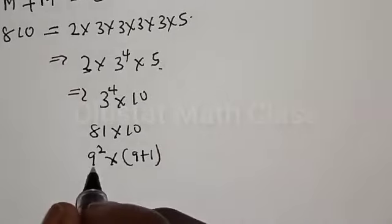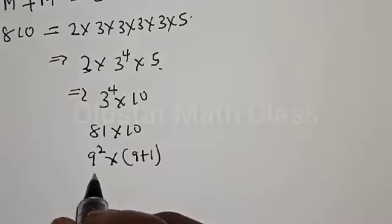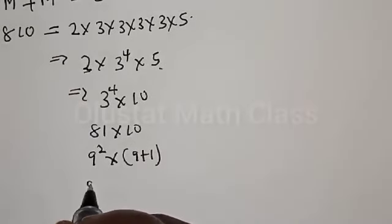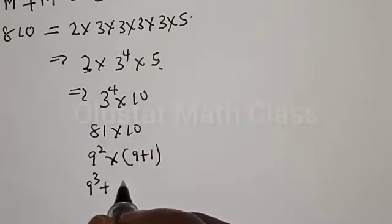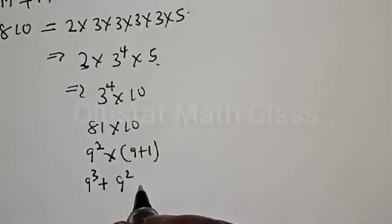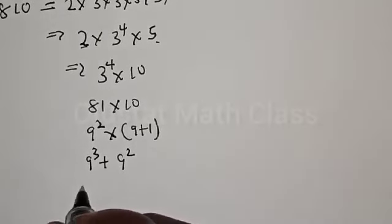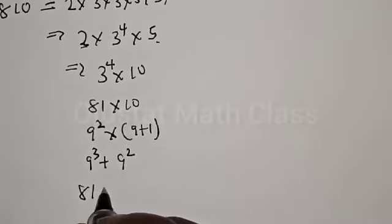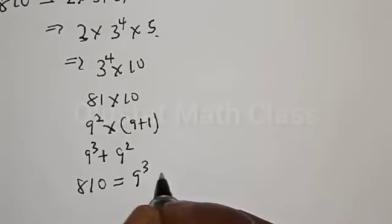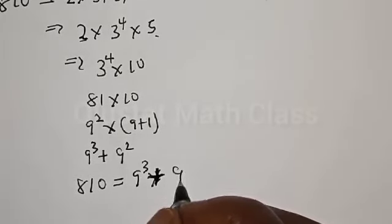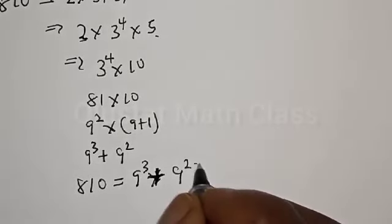And 81 is the same thing as 9 squared, then multiplied by 10, which can be written as 9 plus 1. Let's open this bracket. We have 9 squared multiplied by 9, that is 9³, plus 9 squared multiplied by 1, which is 9². So therefore, 810 can be expressed as 9³ plus 9².